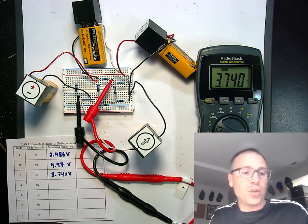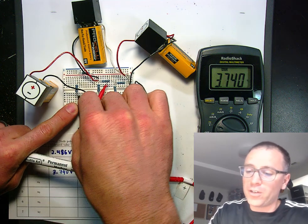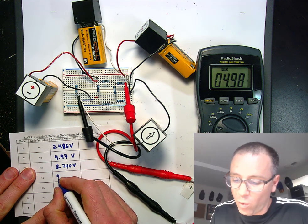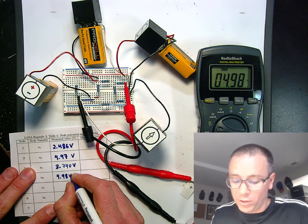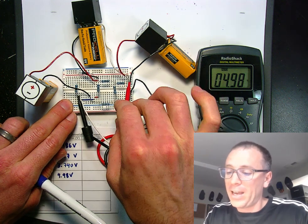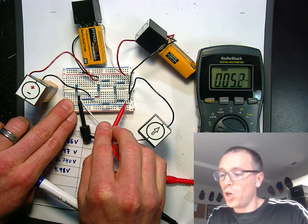We'll go on to node 4, which is going to be on the other side of resistor 7, based on the original schematic, which it looks like 4.98 volts is what we get from the measurement that we take.